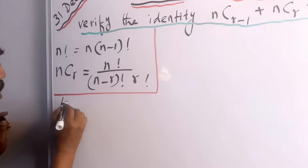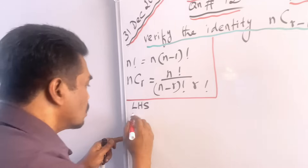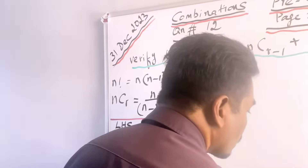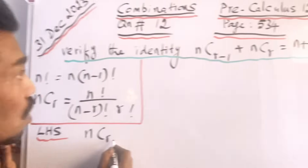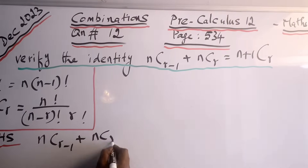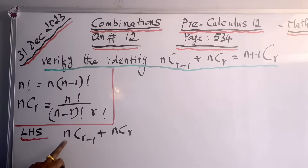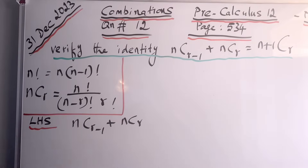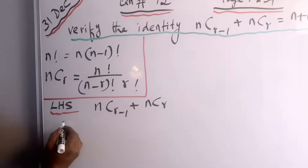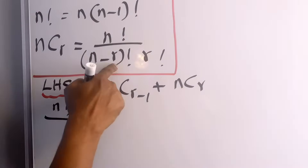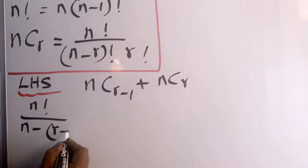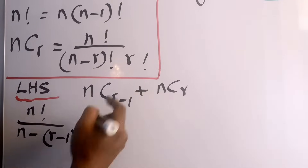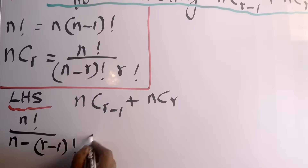The left-hand side is nC(r-1) + nCr. Using the combination formula, nC(r-1) can be written as n factorial over (n minus (r-1)) factorial times (r-1) factorial.